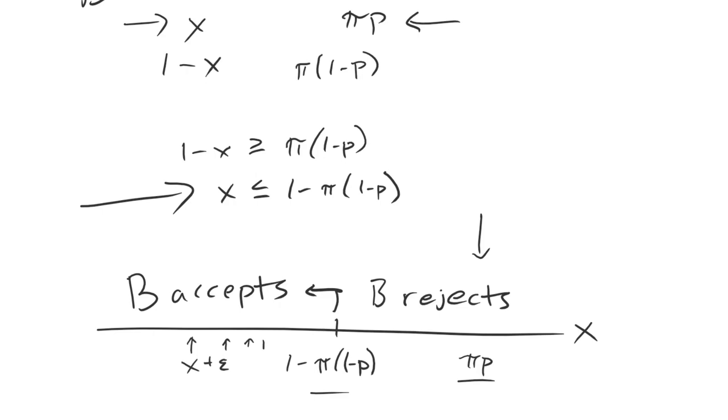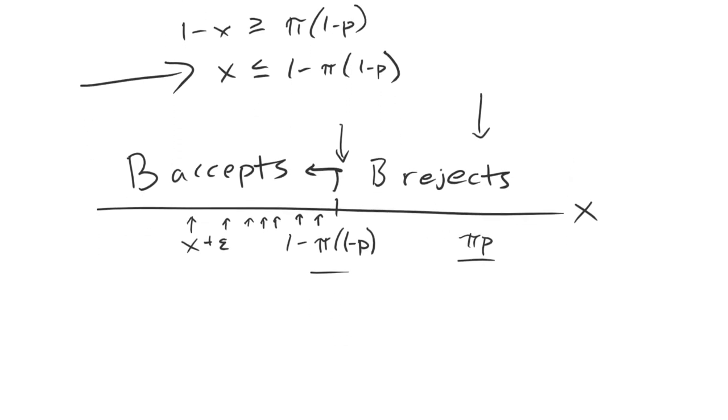But that logic holds true all the way on this interval until we get to the cut point. At this point, if A tries demanding a little bit more, B will switch from accepting to rejecting. So the optimal demand for A is 1 minus pi times 1 minus P.